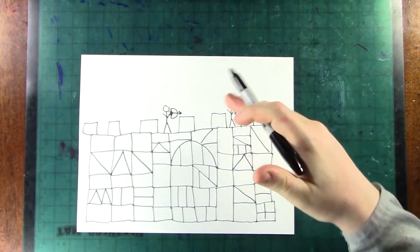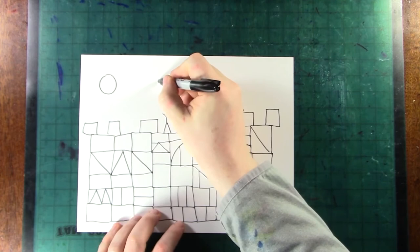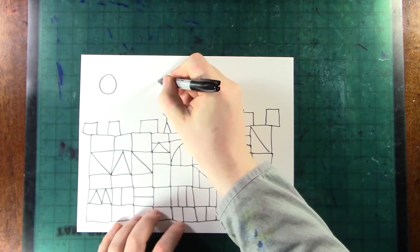Up in the sky above our castle, maybe there would be a sun. That's easy to draw. It's just a circle, right? There might be clouds. The way I draw clouds is a straight line for the bottom of the cloud and then a bumpy, bumpy, bumpy on the top of the cloud.